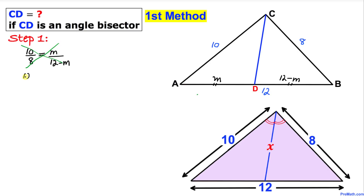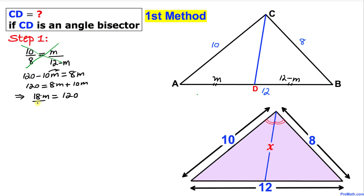Cross multiplication gives us 120 minus 10M equals 8M. Moving 10M to the right-hand side: 120 equals 18M, which implies M equals 120 over 18. Isolating M by dividing both sides by 18, that reduces to 20 over 3. That is our M value.